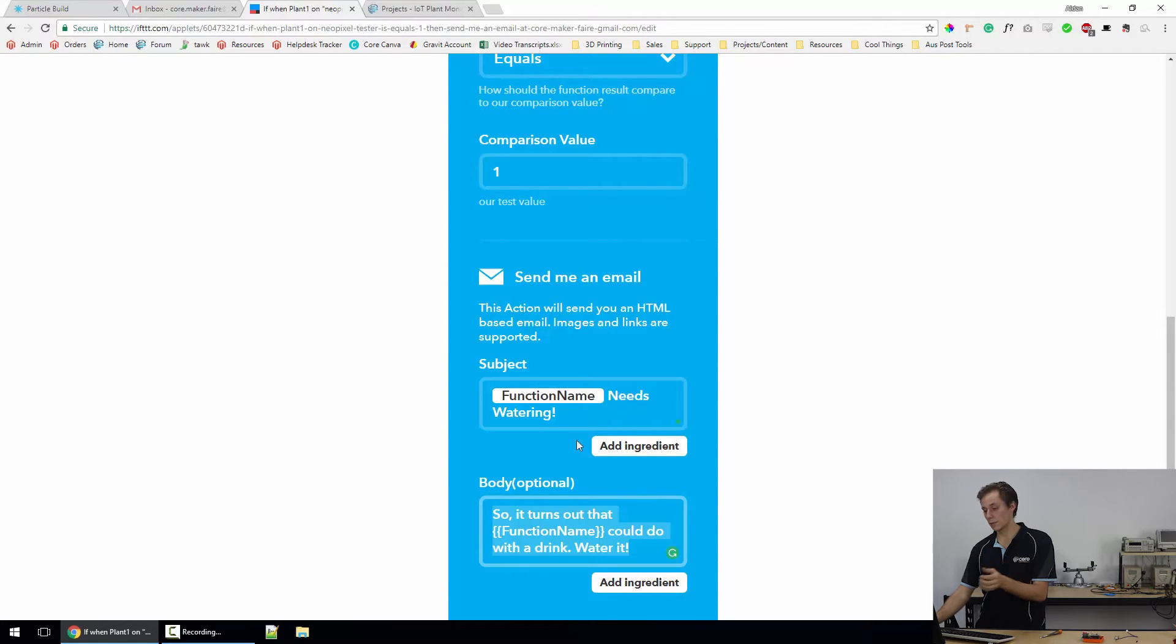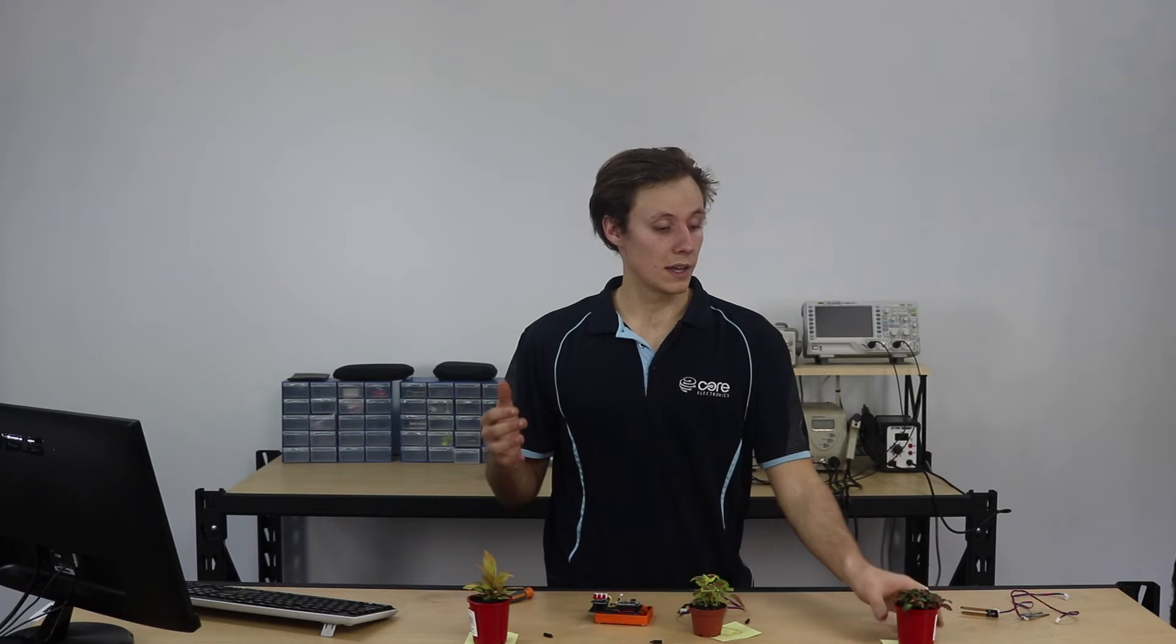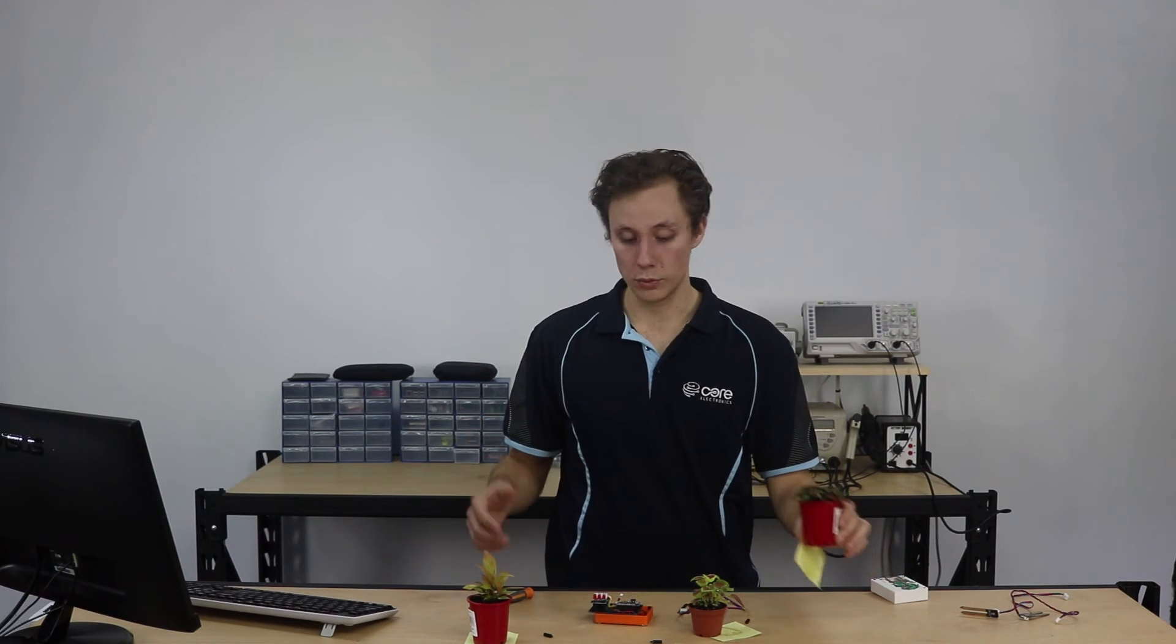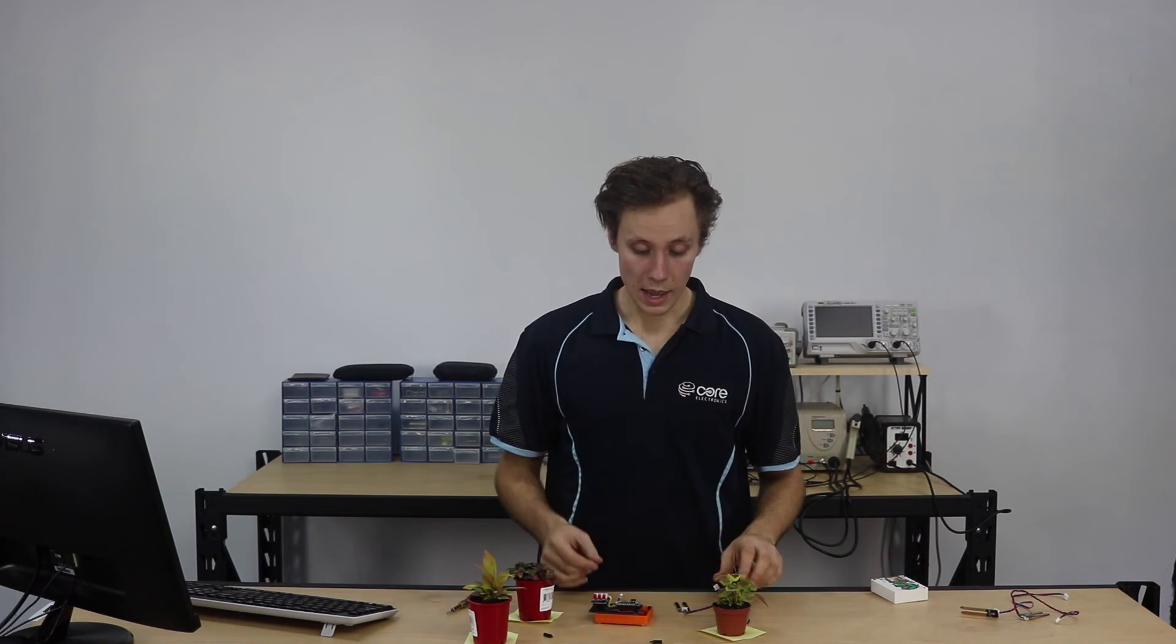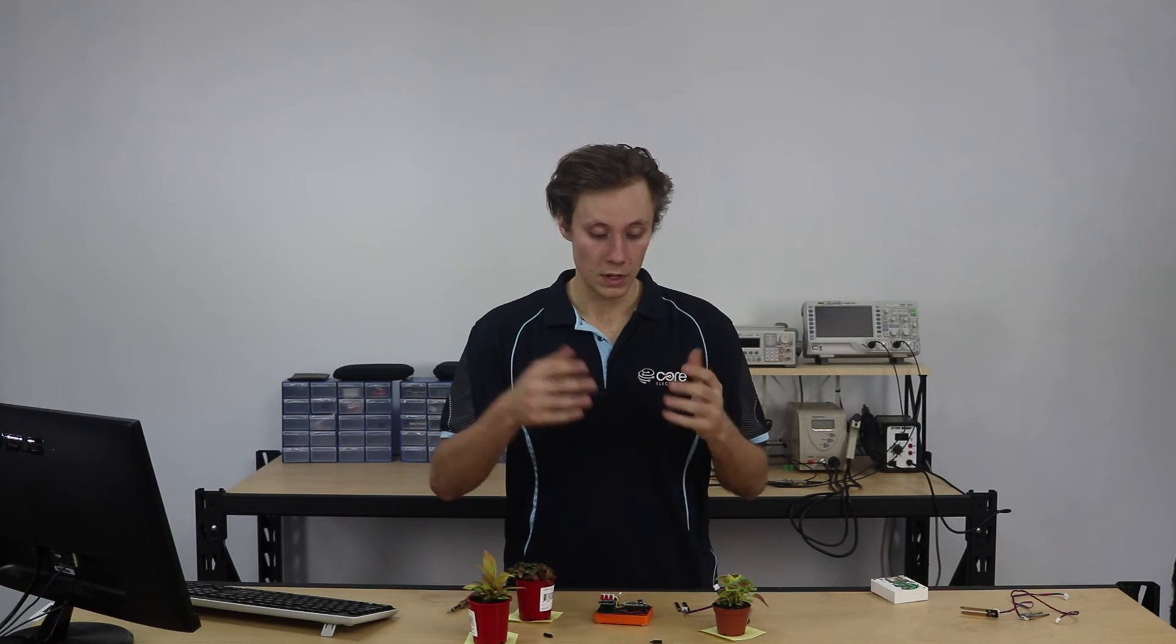And it tests that and if it is equal to one saying the plant is dry and action needs to be taken then it will send an email to my chosen email address with the following message and that's all there is to it. It's really really easy to create IoT based projects that do everything from email to plant monitoring. We created the IoT house and the IoT mailbox which operate on similar principles especially with the particle gear because it is so user friendly and so easy to create IoT projects and applications with it.